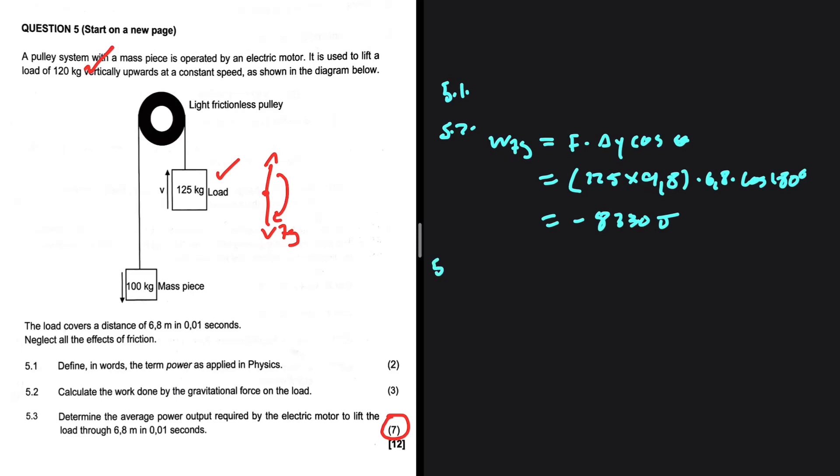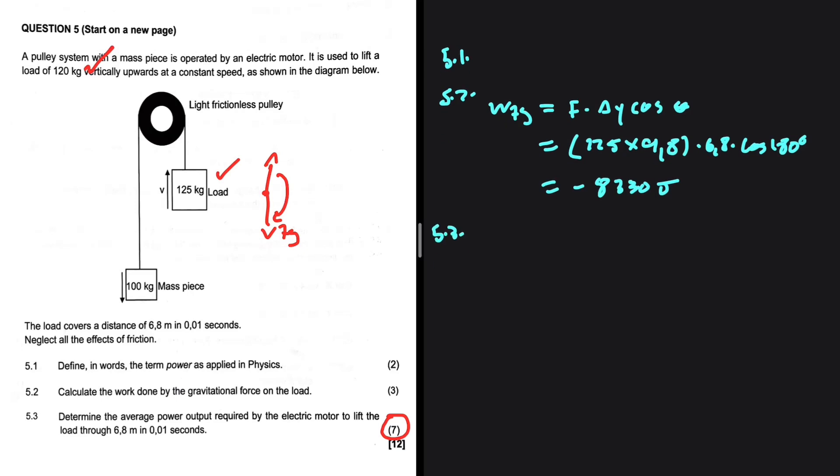And now 5.3: determine the average power output required by the electric motor to lift the load through 6.8 meters in 0.01 seconds. So the key takeaway here is the fact that they are moving at a constant velocity.